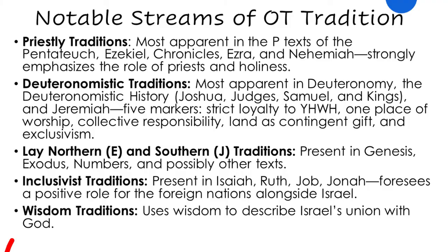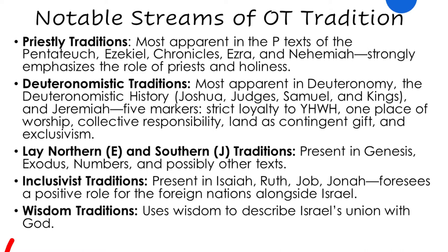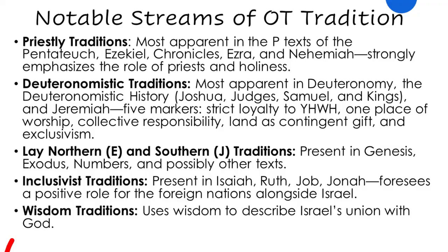Deuteronomistic theology is known for five markers: strict loyalty to the Lord, one place of worship (eventually Jerusalem), collective responsibility (Israel is rewarded or punished based on the moral quality of the nation), the land as a contingent gift, and exclusivism — the idea that God has chosen Israel as his own people. Beyond priestly and Deuteronomistic traditions, we have lay northern and southern traditions, inclusivist traditions (seen especially in Isaiah, Ruth, Job, and Jonah), and the wisdom tradition.